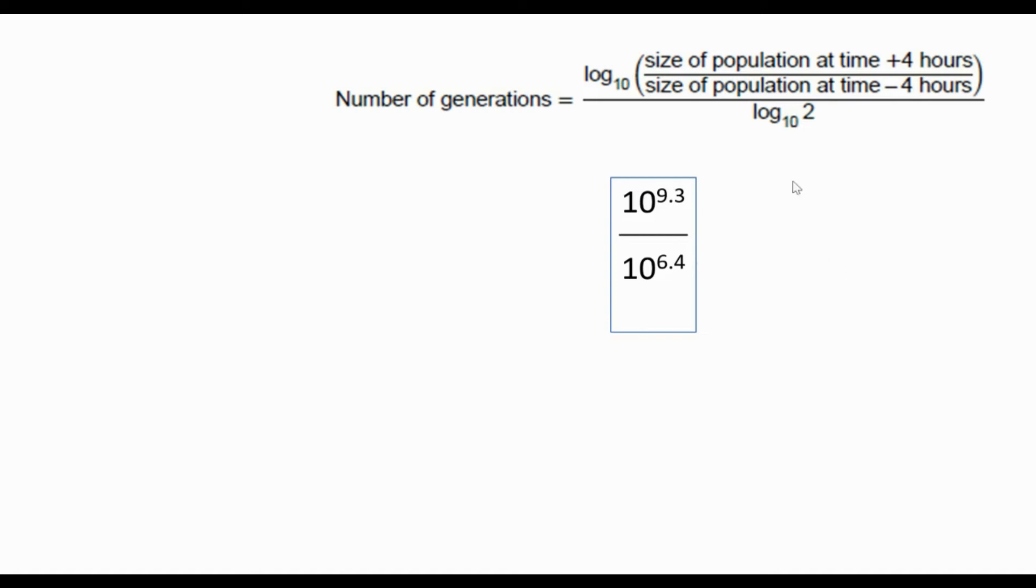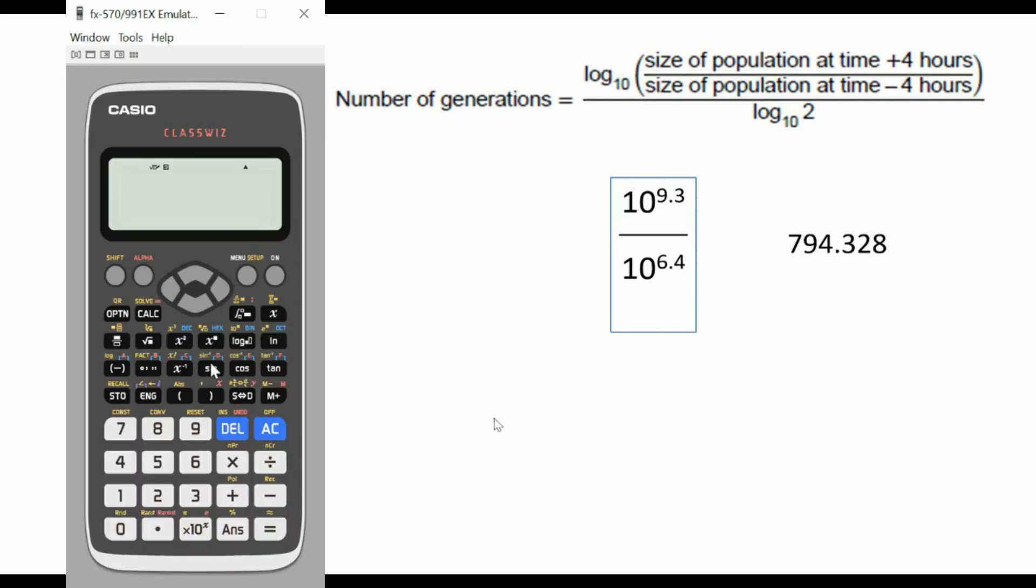Three divided by shift 10 to the 6.4, and that gives you 794.328. Now we need to multiply it by log10, so let's go to the log10. So log 10 and then use that button, and it's 794.328. That gives us 2.89 recurring.